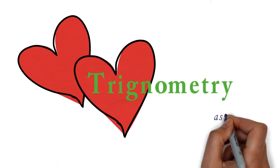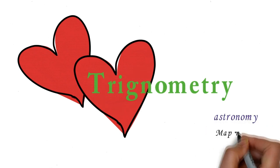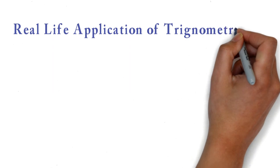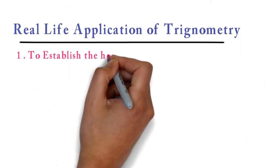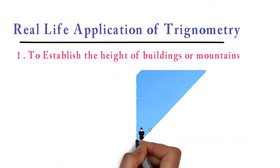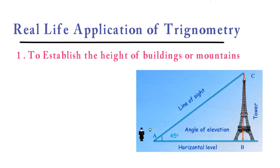Real-life applications of trigonometry include establishing height of buildings and mountains. If you know the distance from where you observe the building and the angle of elevation, you can easily find the height of buildings.